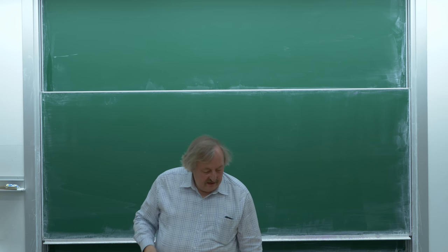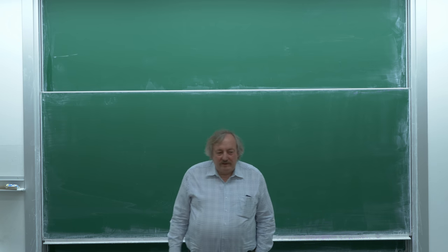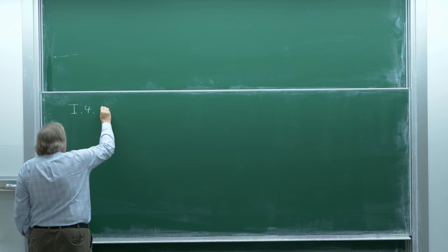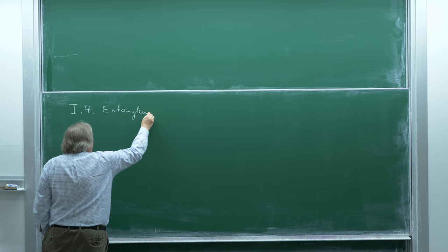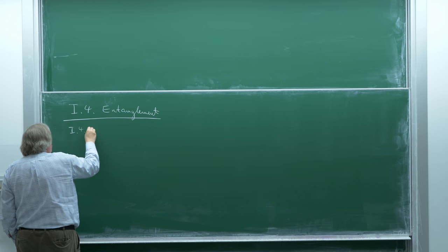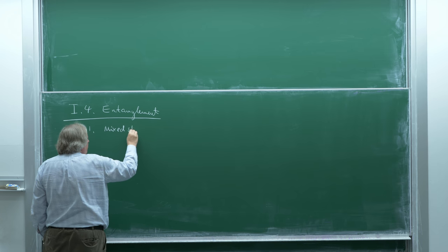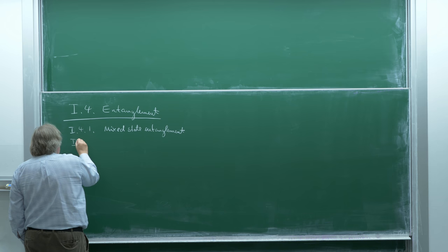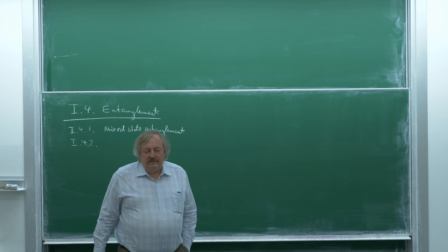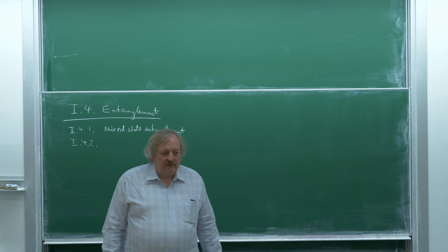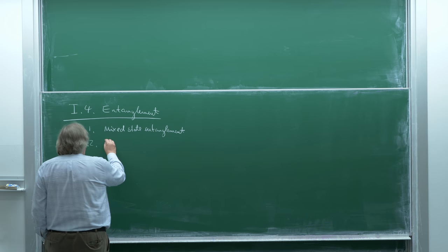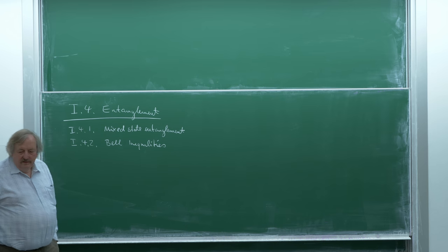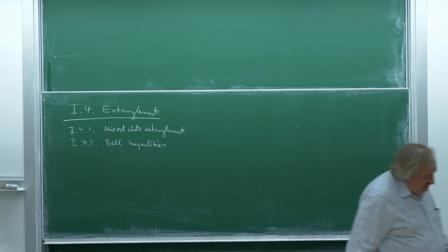Back to English. After this big break, let's start with a few reminders. We were in section 1-4 on entanglement. We talked about mixed-state entanglement. I defined what an entangled state is — that is, not a mixture of products. And then we looked at inequalities. That's basically where we are.